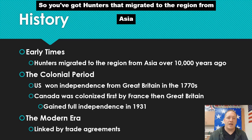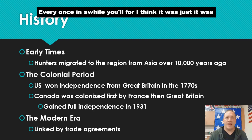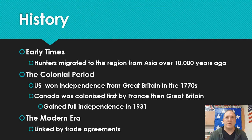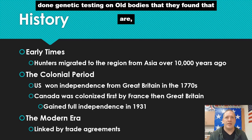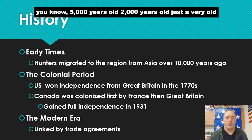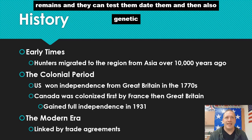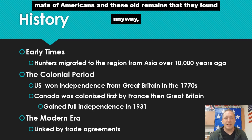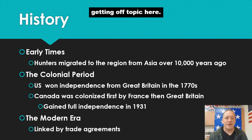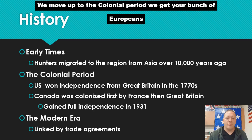So you've got hunters that migrated to the region from Asia over 10,000 years ago. Recently, archaeologists found very old human remains up in Alaska. They've done genetic testing on old bodies — some 5,000 years old, some 2,000 years old — and found common genetic links between current Native Americans and these old remains. Anyway, that's early times. Let's move up to the colonial period.